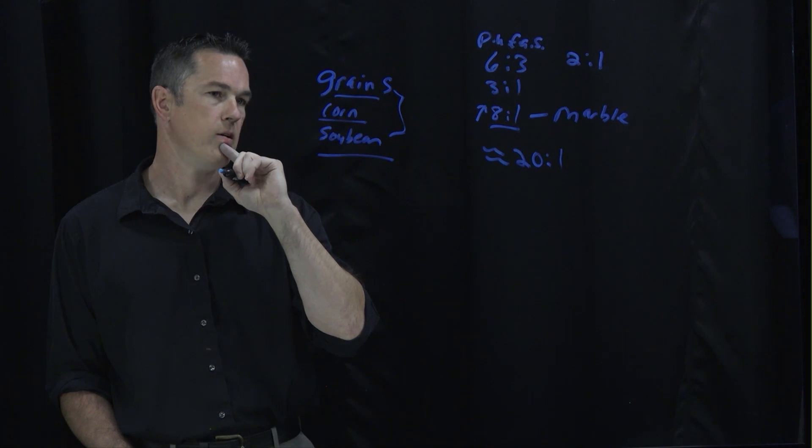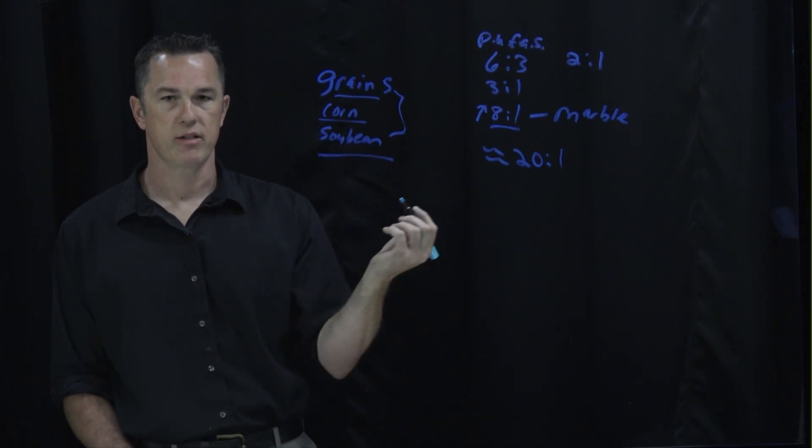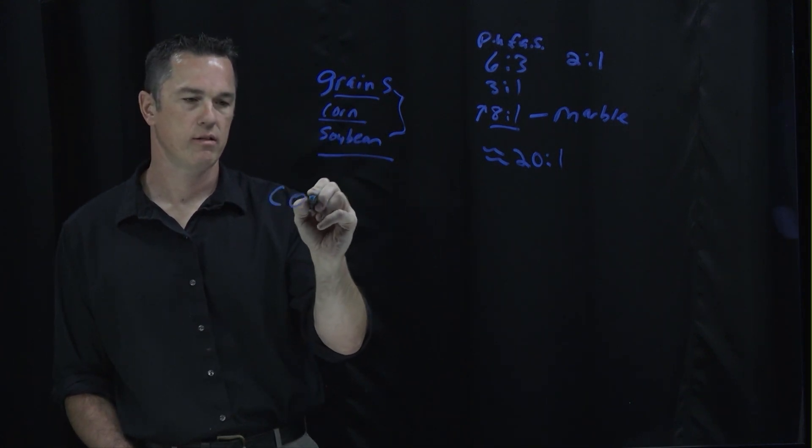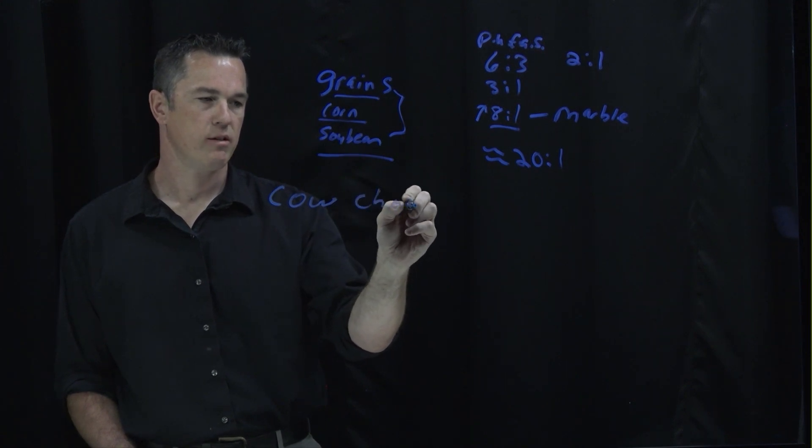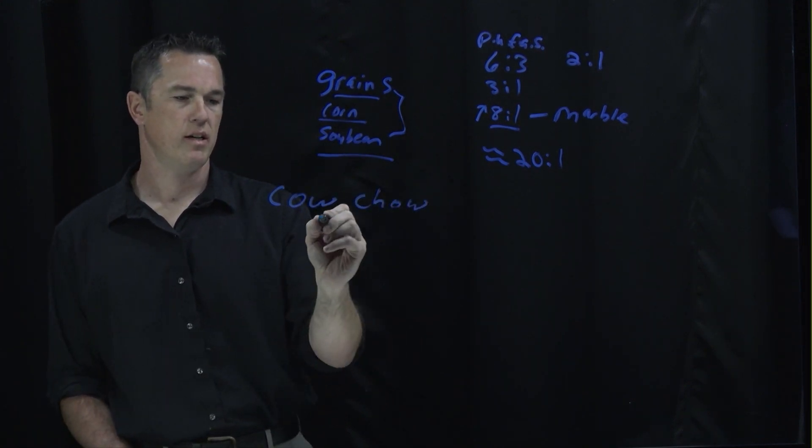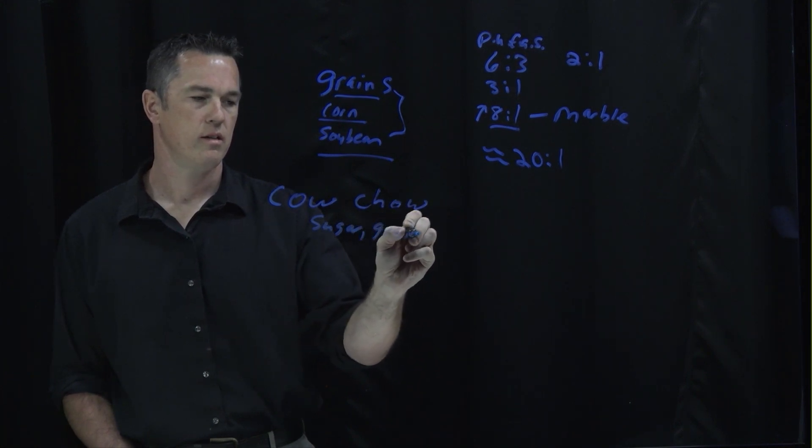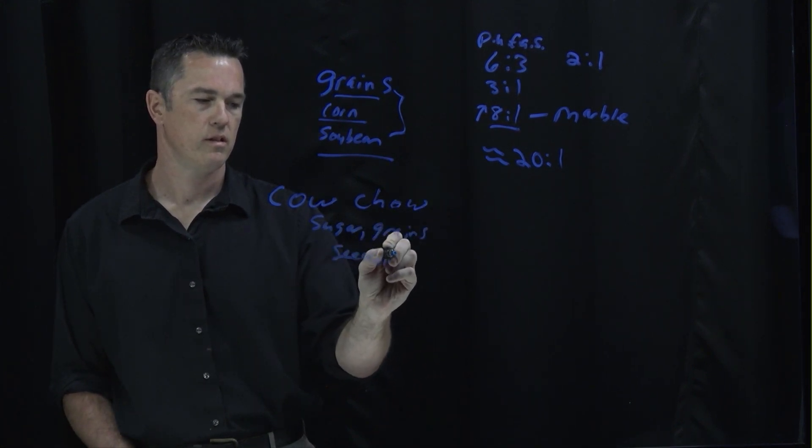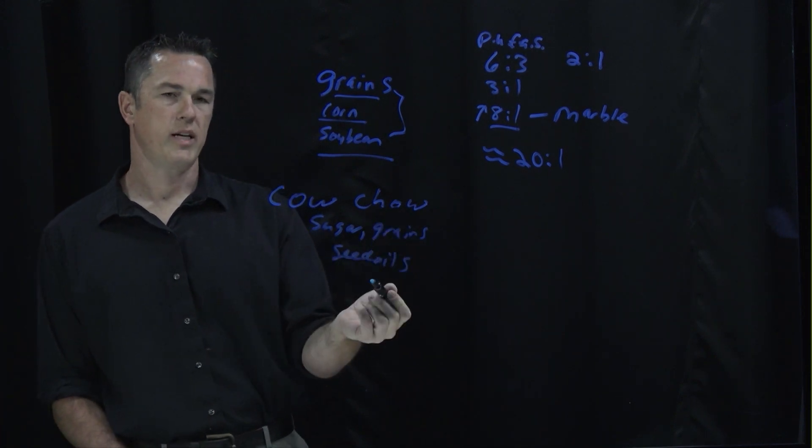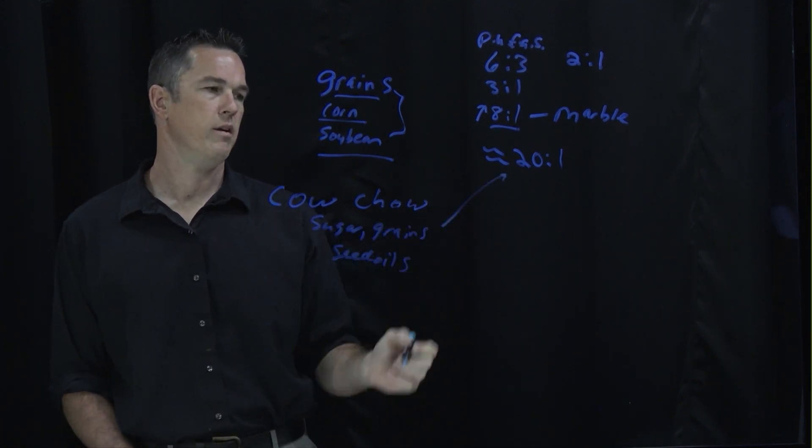And so I teach my patients about cow chow. Cow chow is basically the ultra-processed sugar, grains, and seed oils. If you eat cow chow, you end up here.